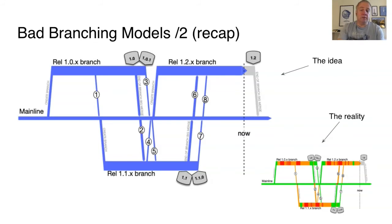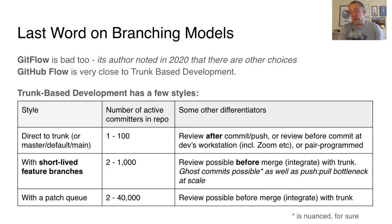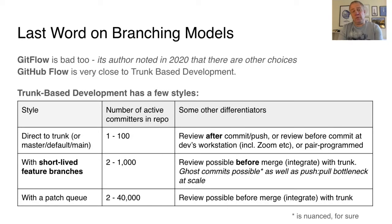This model correlates with quarterly planned releases, with unplanned 0.01 releases following each one. GitFlow is a bad branching model — though its author has noted there are other choices. GitHub Flow, a 2008 contribution from GitHub, is very close to trunk-based development.